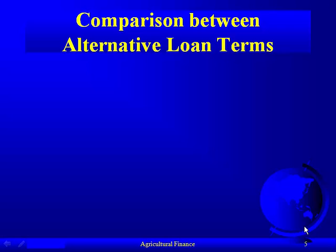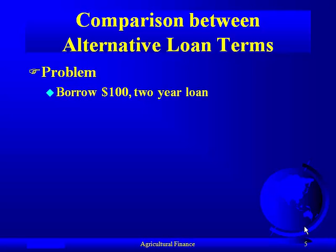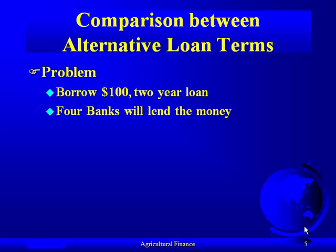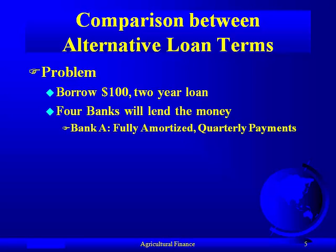The focus of this lecture is the comparison between alternative loan terms. The problem we're facing: we're looking at borrowing $100 for a two-year loan. It's a small amount, short time horizon — easy to put on the screen — but we could easily have made this a $10,000 loan over 15 years, which would mean more entries in the arithmetic, but the procedure is the same. We're going to look at four different banks that lend money, or it could be one bank with four different loan terms.